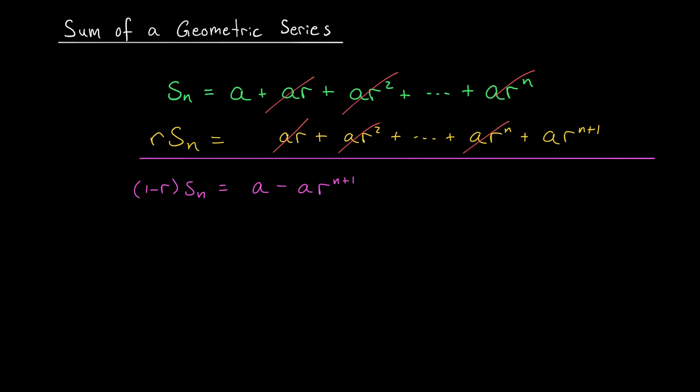Well remember, the goal here is to find sn, and we found it. Just divide both sides by 1 minus r. We find that sn is equal to a times 1 minus r to the n plus 1 divided by 1 minus r. And there you have it, a nice compact expression for the nth partial sum.